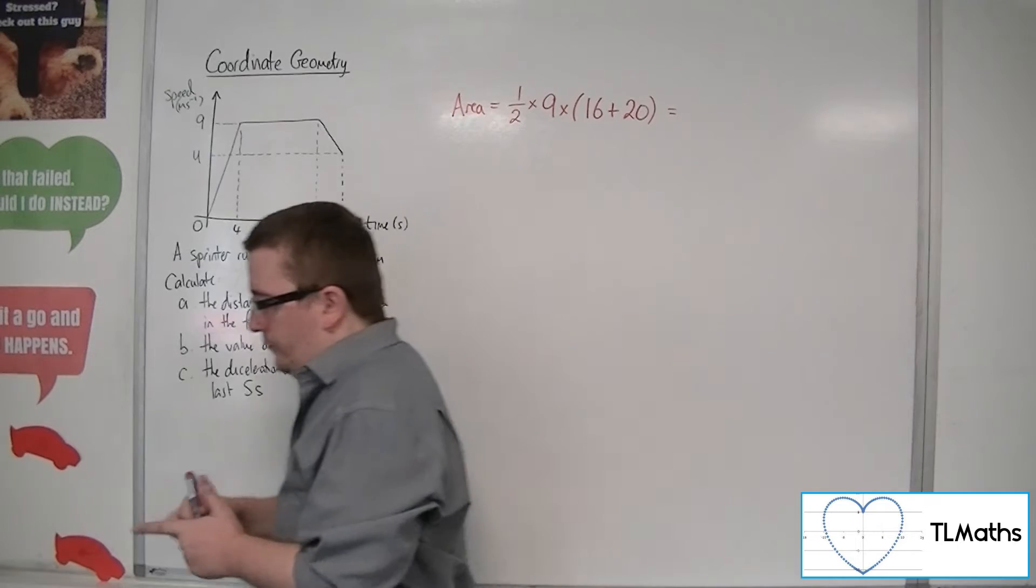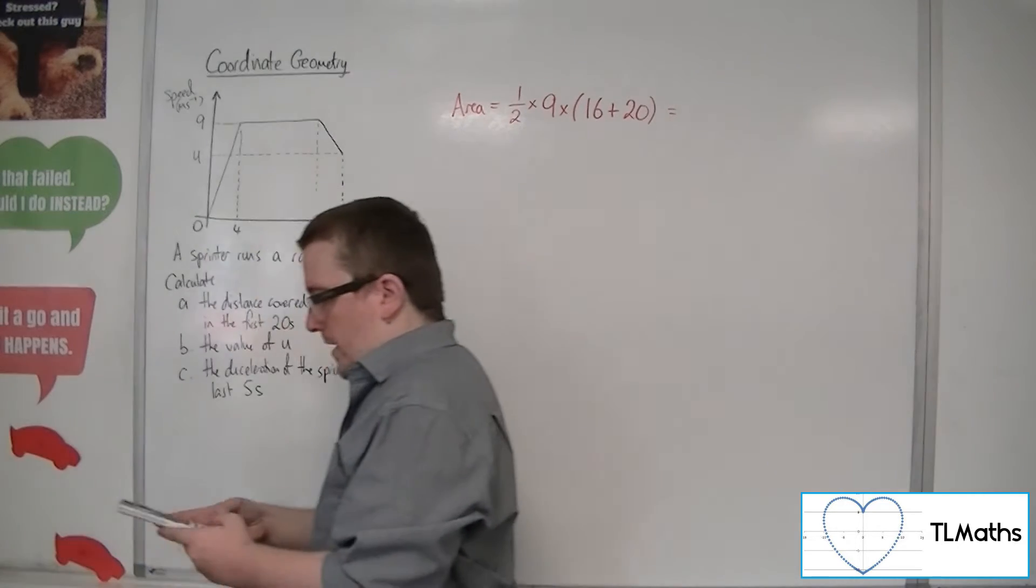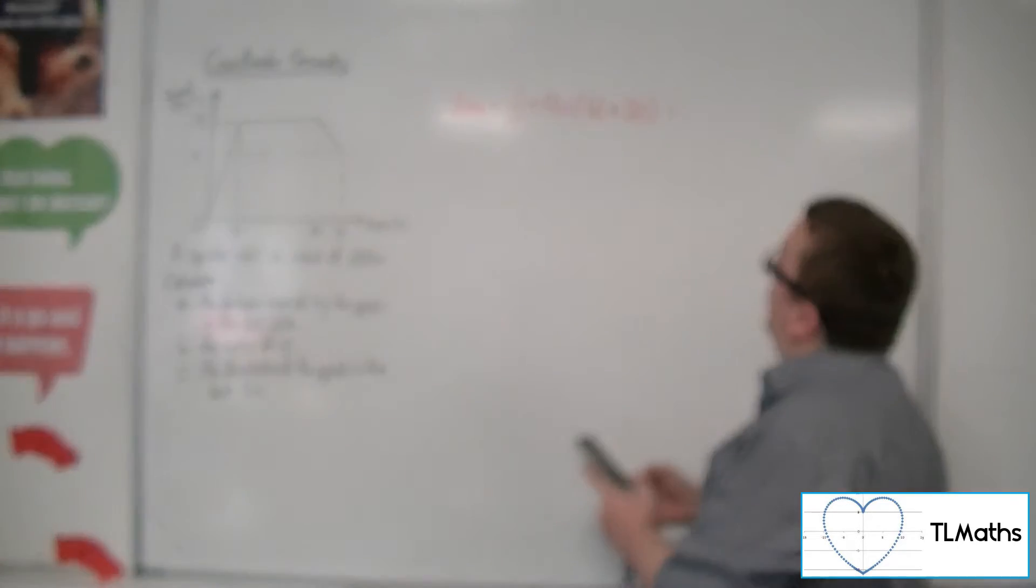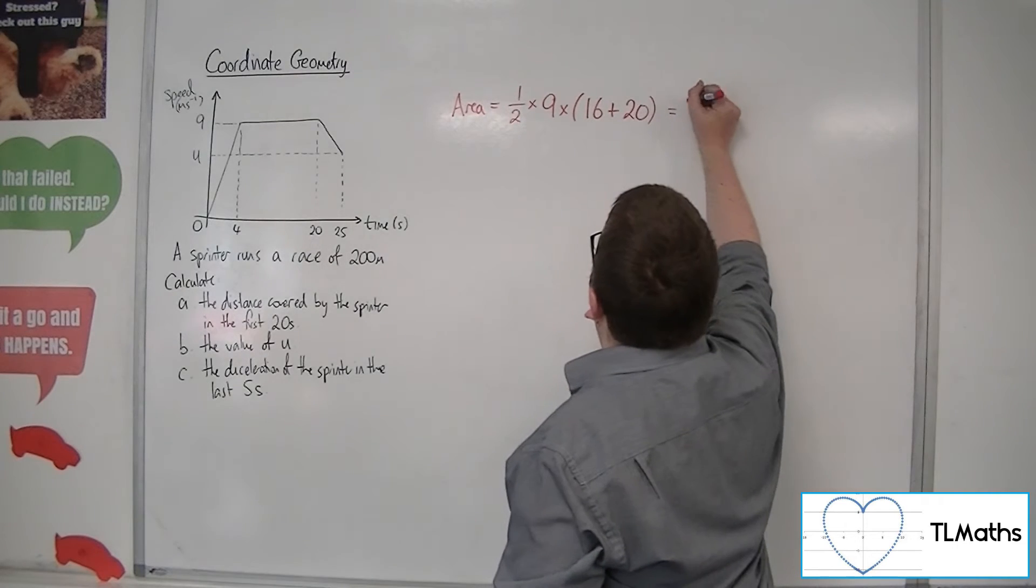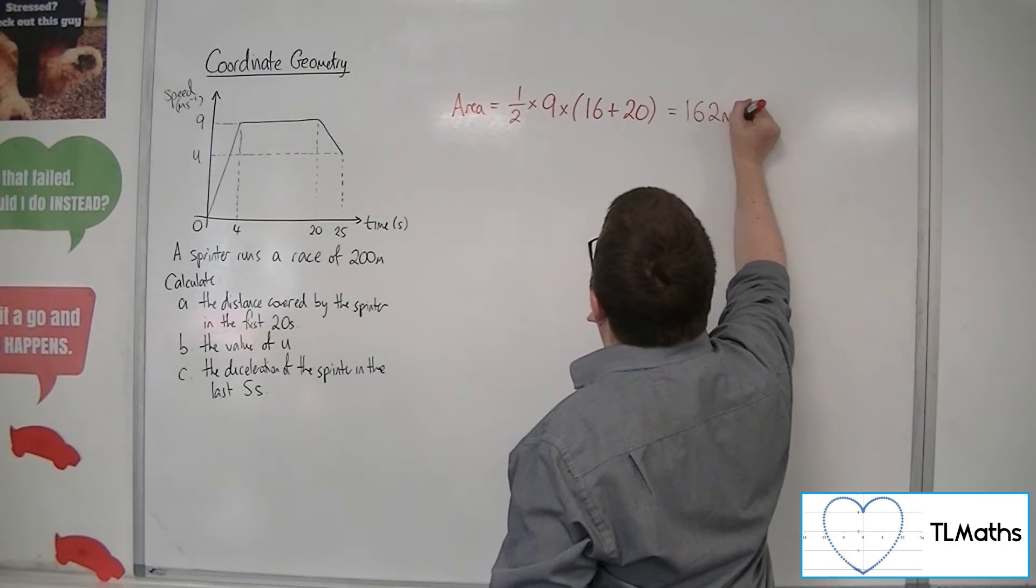So half times 9 times 16 plus 20 is 162. So it's 162 metres.